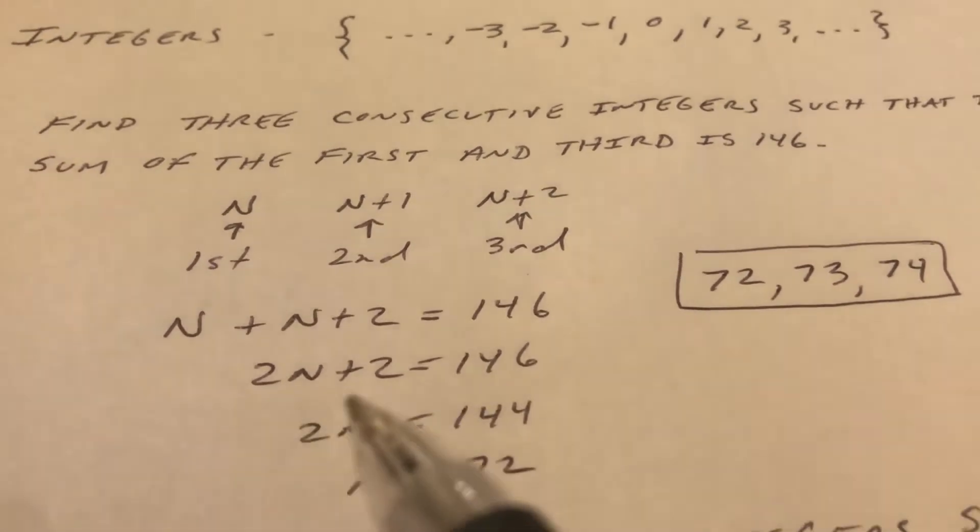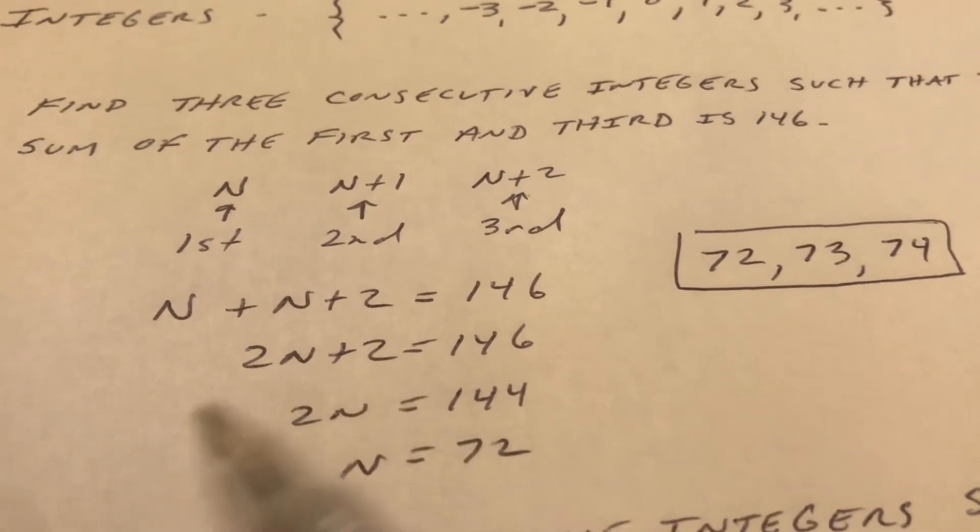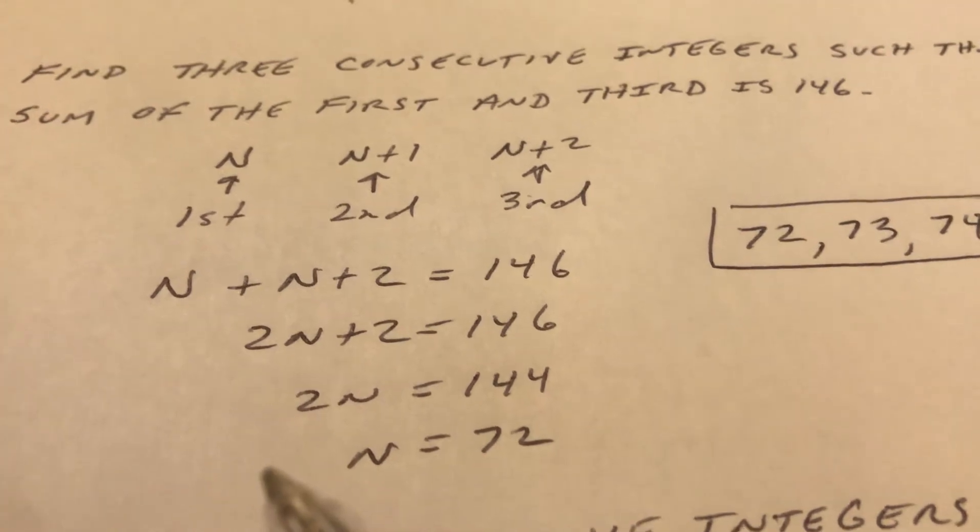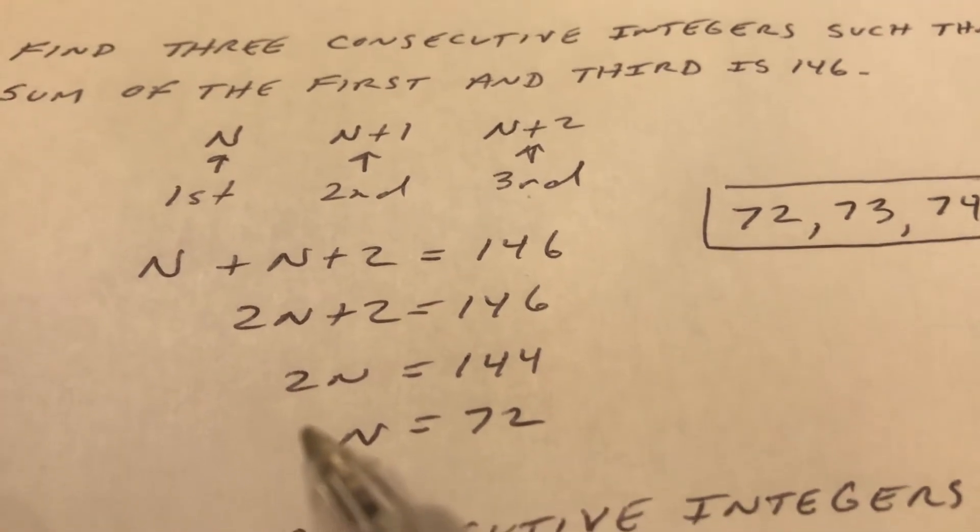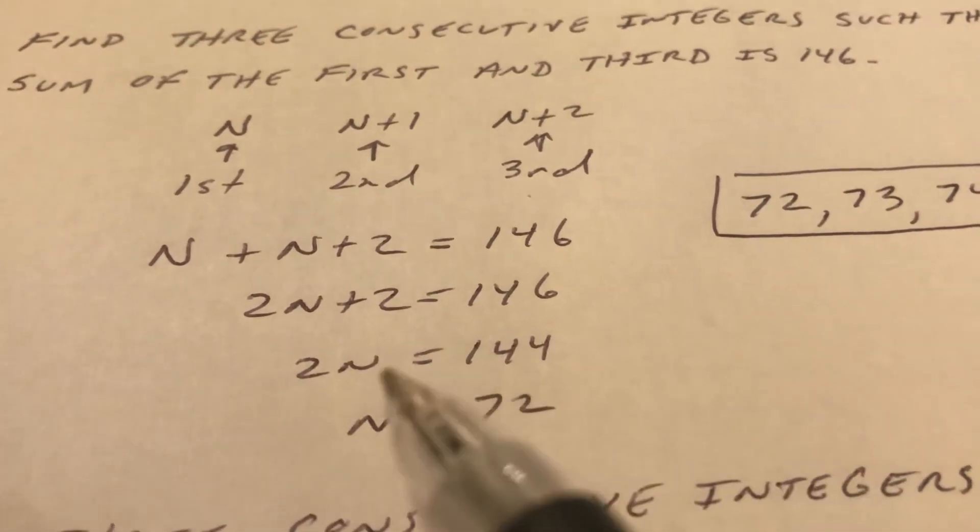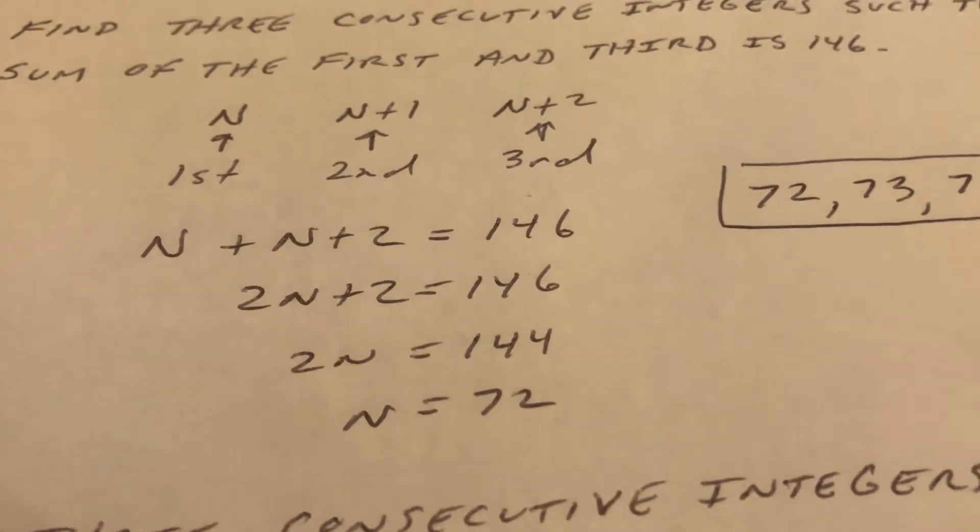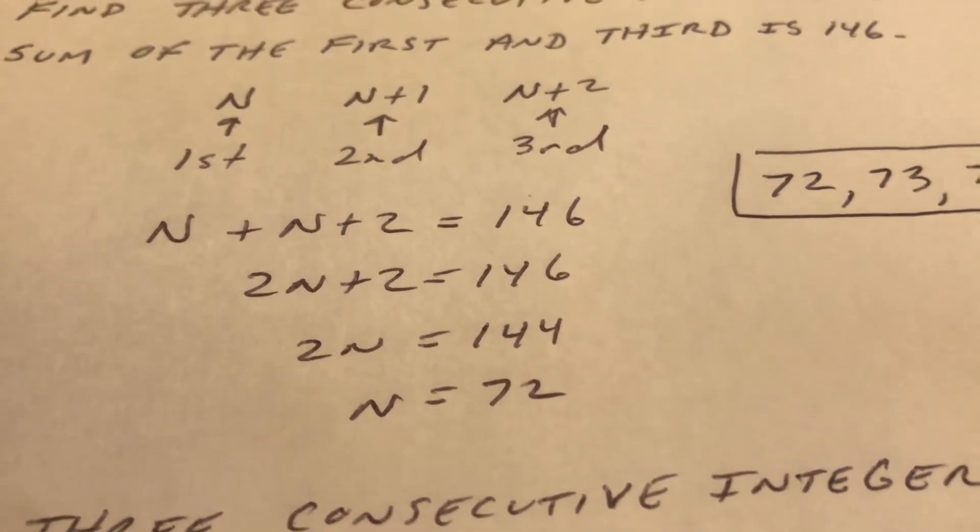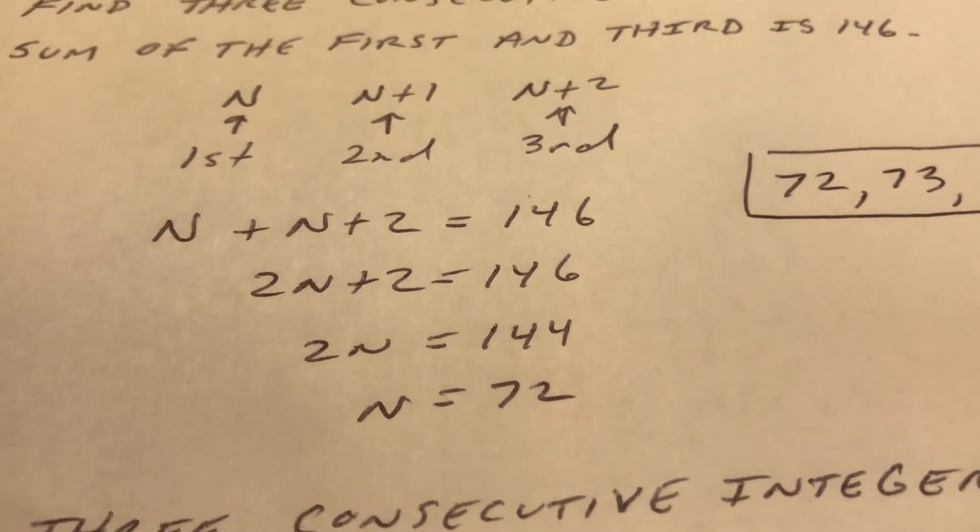I like to simplify each side separately. So 2n plus 2 equals 146. I subtract 2 from both sides. At this point you shouldn't have to write it. You should just be able to do it mentally. 2n equals 144. And then I divide both sides by 2. So n equals 72.